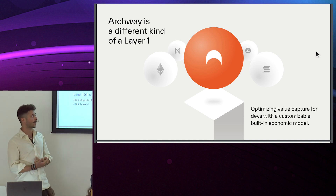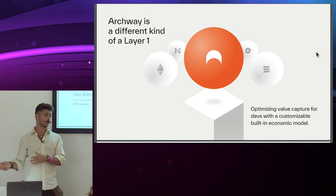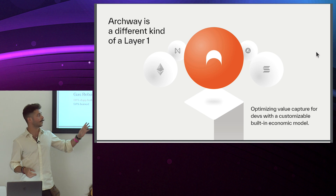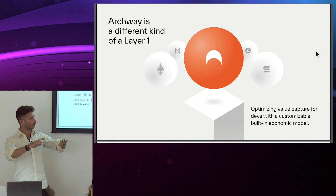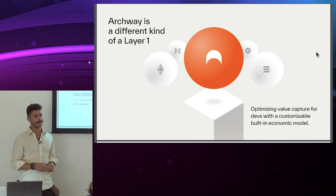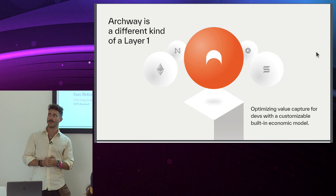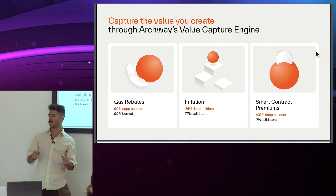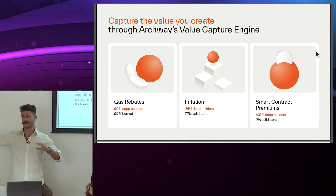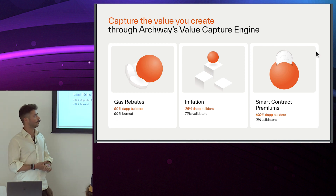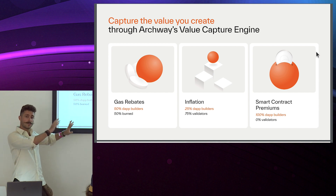The second pillar is inflationary rewards: developers get 25% of inflation, while 75% goes to validators in the normal proof-of-stake fashion. The third pillar is a customizable layer fee — the smart contract premium. You can set a flat fee on contract execution, which resembles a traditional licensing model, like a service charging pay-per-use for its logic.